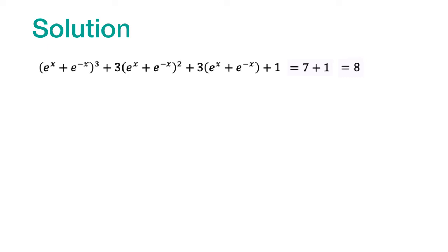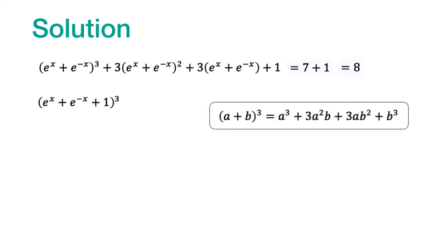The left-hand side of this equation can be written down as (e^x + e^(-x) + 1)³. We have used this well-known expansion of (a + b)³. The right-hand side is 8 which can be written down as 2³.